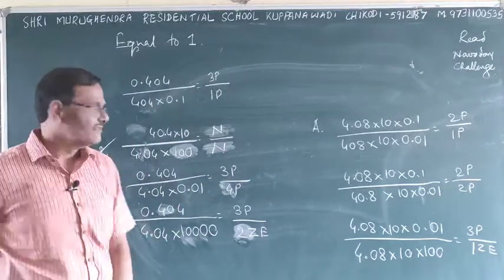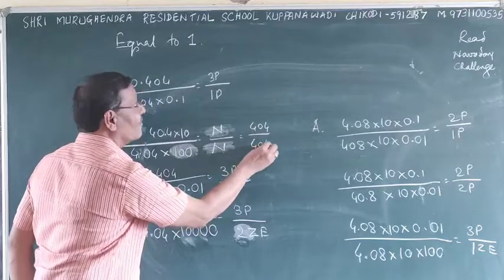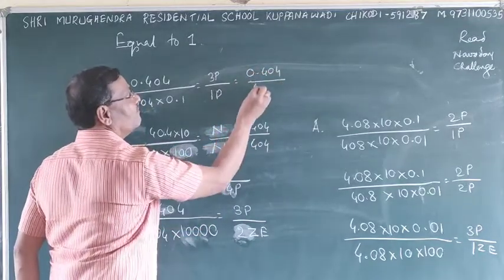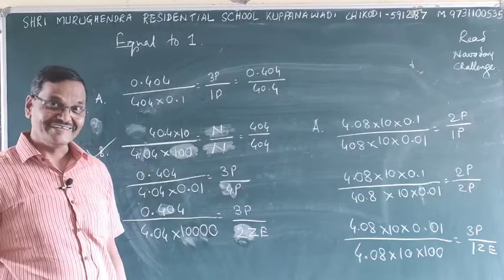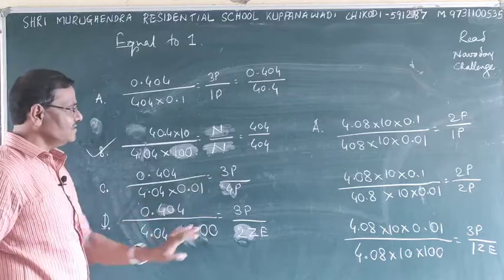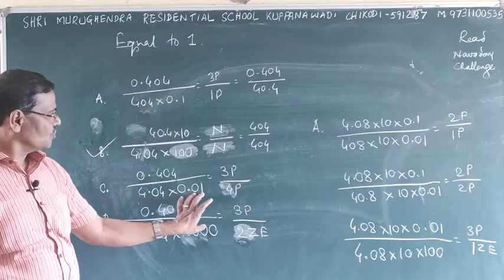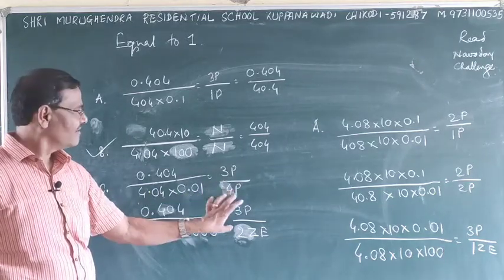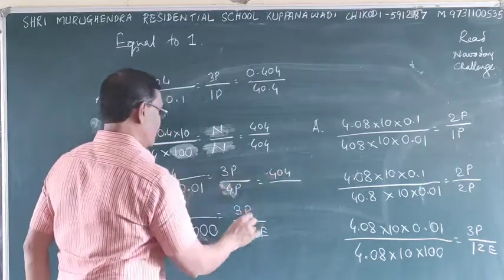This is three places, means 0.04 divided by 40.4. Then 3 plus 4 plus nothing, 3 plus 1, 2, 3, 4. It is 0.404 divided by 0.0404.